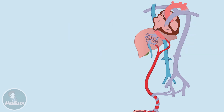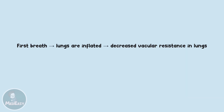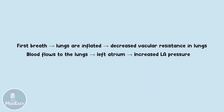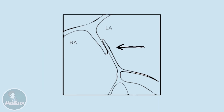Now that we understand fetal circulation, let's discuss what happens immediately after birth. When an infant takes his first breath and his lungs are inflated, this causes vascular resistance in the lungs to decrease dramatically, and this low pressure favors the blood going into the lungs, which will then flow towards the left atrium increasing the pressure there. The increased pressure gradient in the left atrium versus the right atrium will push the septum primum towards septum secundum, sealing the foramen ovale. The resulting depression in this area is called fossa ovalis.